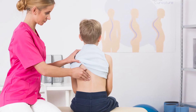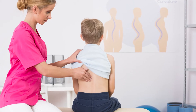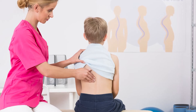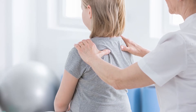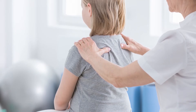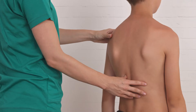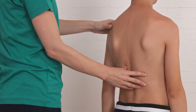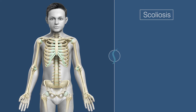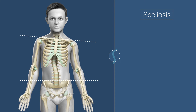Children are usually screened for scoliosis during their annual checkup. Doctors check for any asymmetry between the shoulder blades as well as shoulder and hip height. You should be able to draw a horizontal line between the tops of the patient's shoulders and across the waist. Those with scoliosis will not have these straight horizontal lines — instead, the lines will be diagonal.